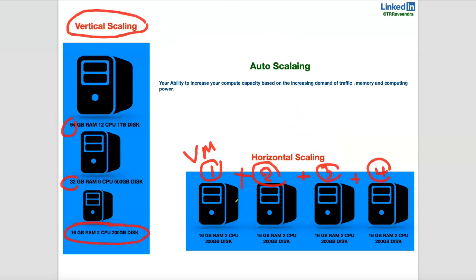So based on demand — consider cloud is pay-as-you-go. Like when you are booking an Uber cab: if you want to travel with four people, you book one cab; if you want to travel with eight people, you book two cabs; if you want to travel with twelve people, three cabs; sixteen people, a fourth cab. That is your ability to increase compute capacity based on increasing demand. If you have more demand, go and increase — then you pay for that. Cloud's basic concept is pay-as-you-go, like Uber and Ola.